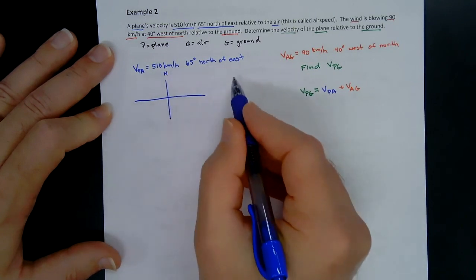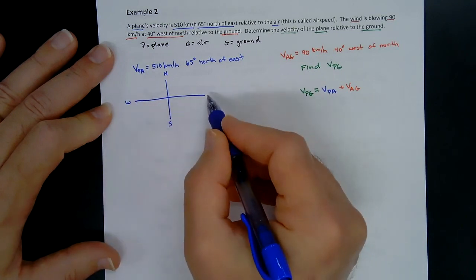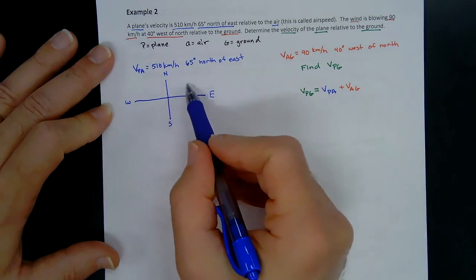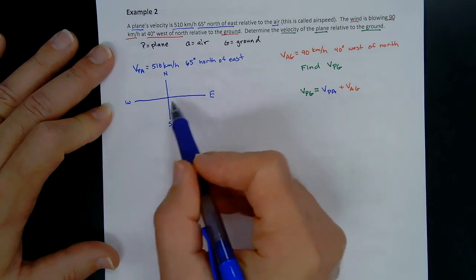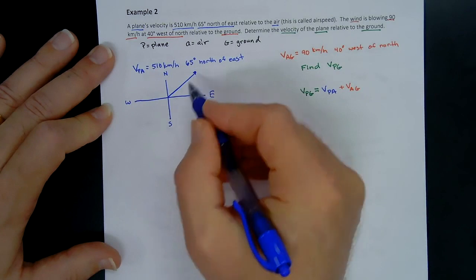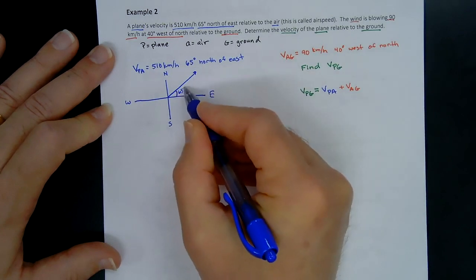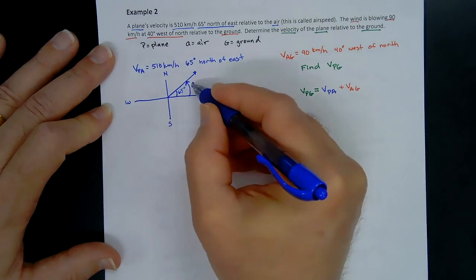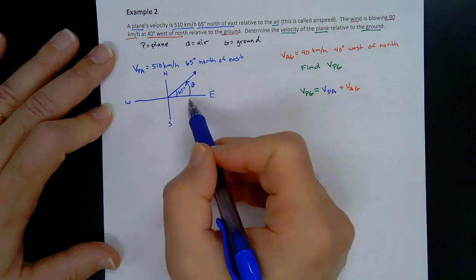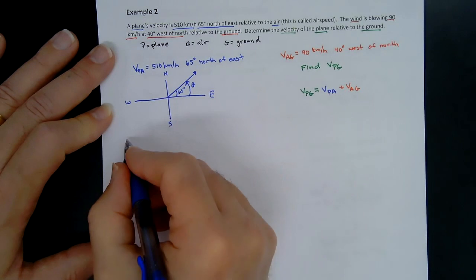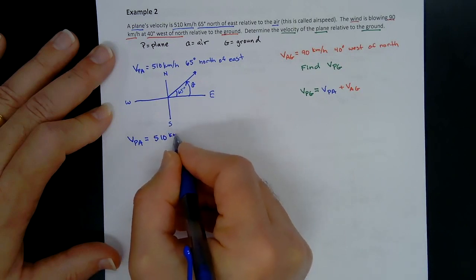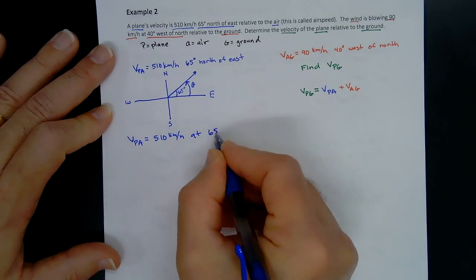For V sub PA: 65 degrees north of east. We start facing east and rotate 65 degrees toward north — that's in the first quadrant. In this quadrant, the descriptive angle and the rotation angle are the same. So V sub PA equals 510 kilometers per hour at 65 degrees.